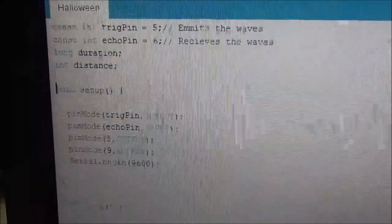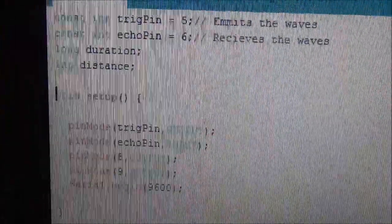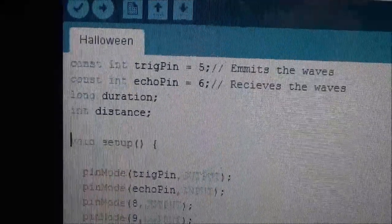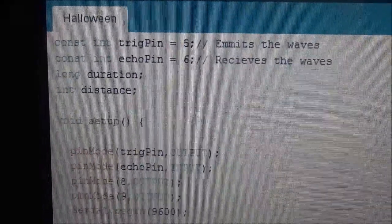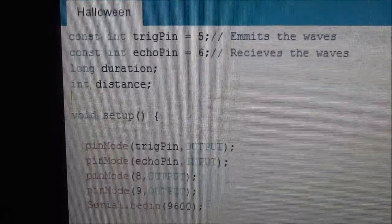Here's the code for my project. So in the beginning I have declared two constant integer variables. One is the constant int trigger pin which I have set to 5, and the other one is for the echo pin which I have set to 6.